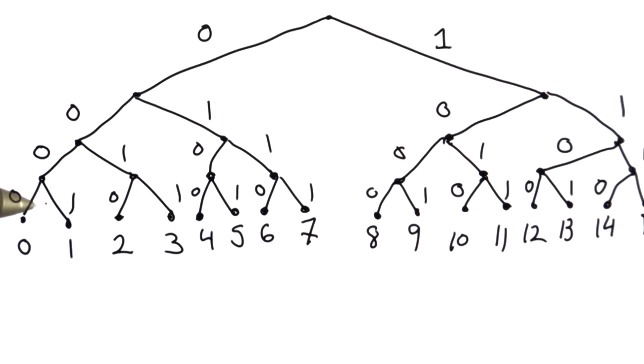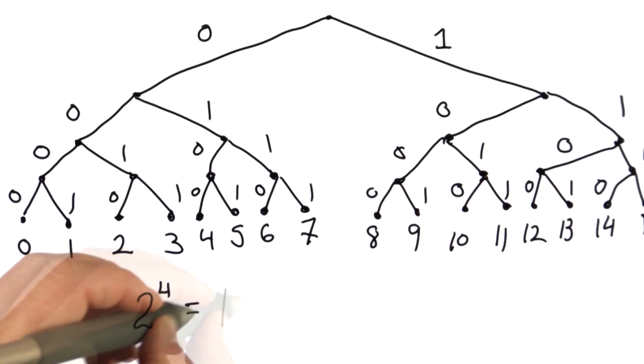So here I've got four bits. That means I have four yes-no choices, and I can encode 16 different numbers. And the reason for that is because 2 to the 4 is 16.